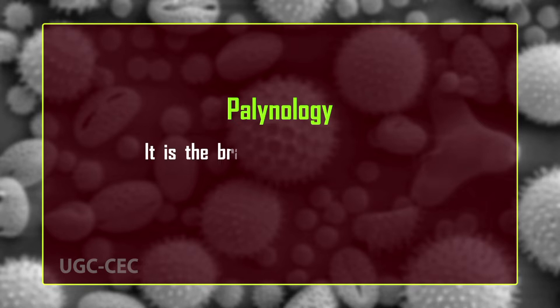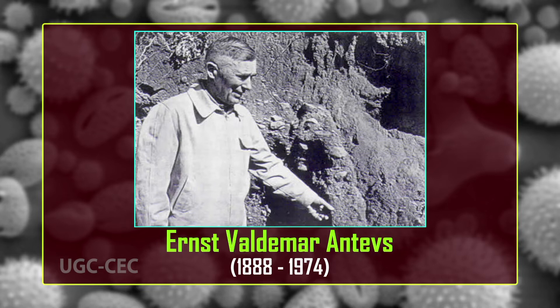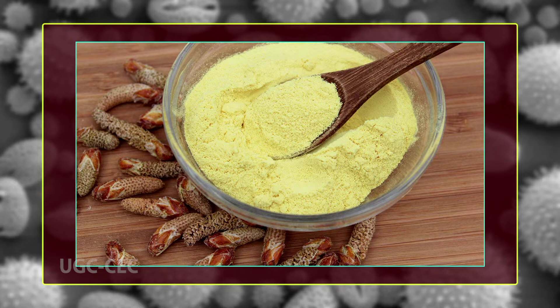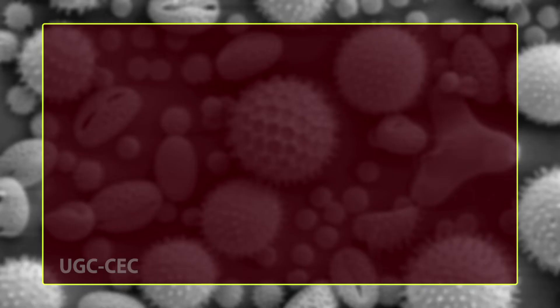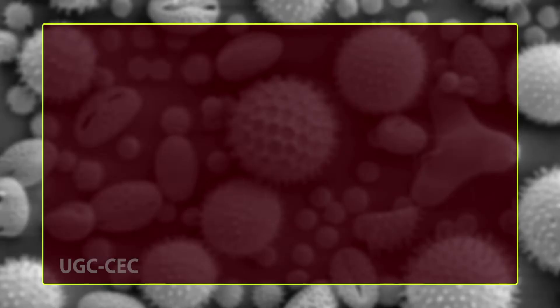First we will discuss what is meant by palynology. Palynology is the branch of plant sciences which deals with the study of pollen grains. The term was first coined by Ernest Antews and co-workers in 1944. The term is derived from a Greek word 'pally' which means dust or fine flour. The dominating object of palynology is the pollen grain, which is the point of origin and the carrier for male gametes. Pollen grains represent an extra generation in seed plants — the highly reduced male gametophyte.